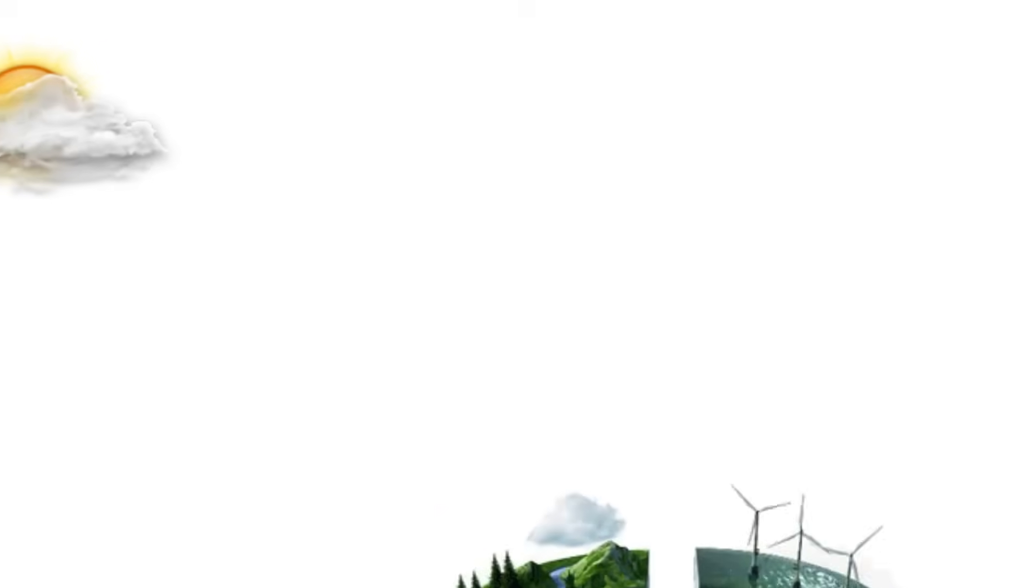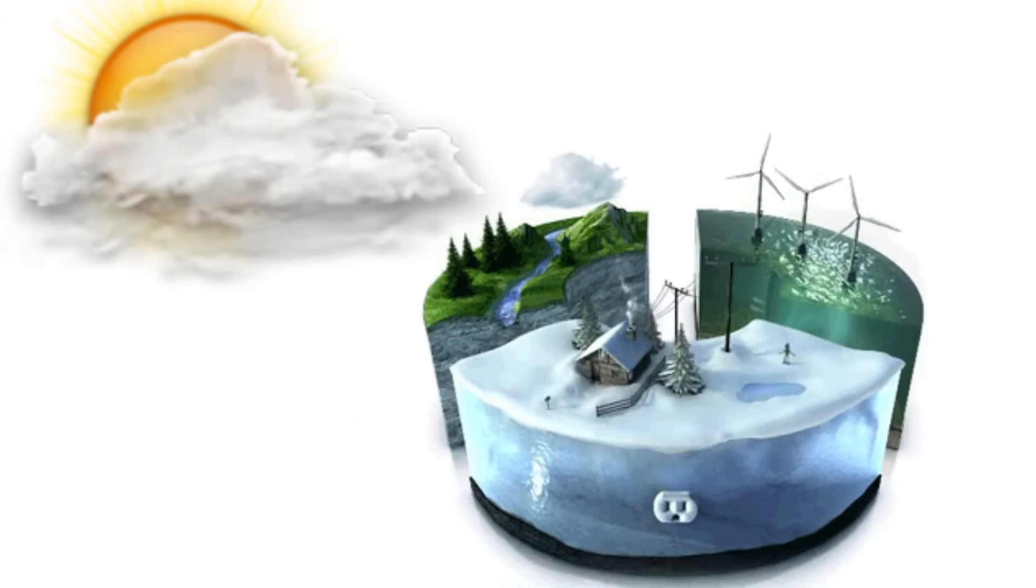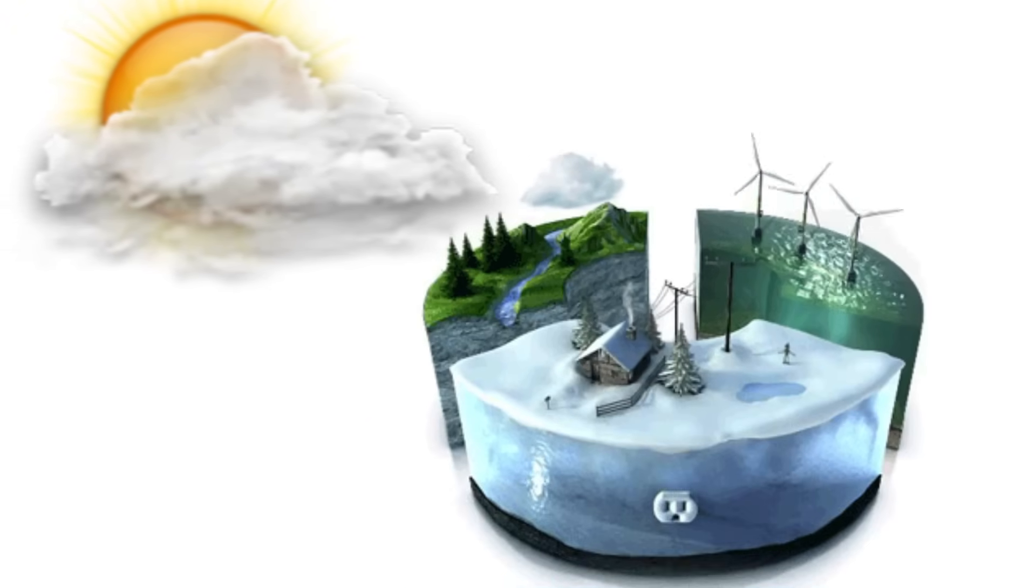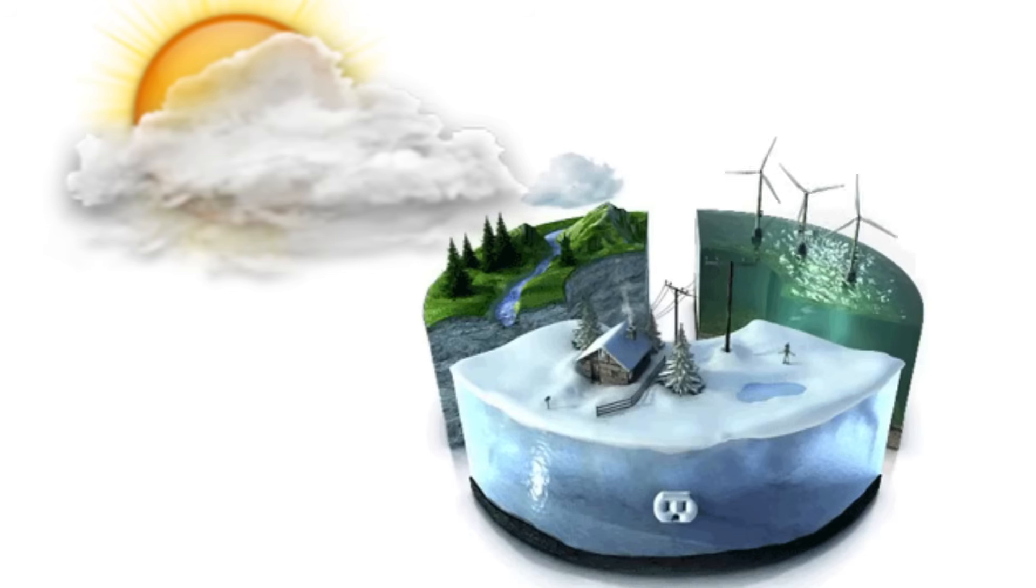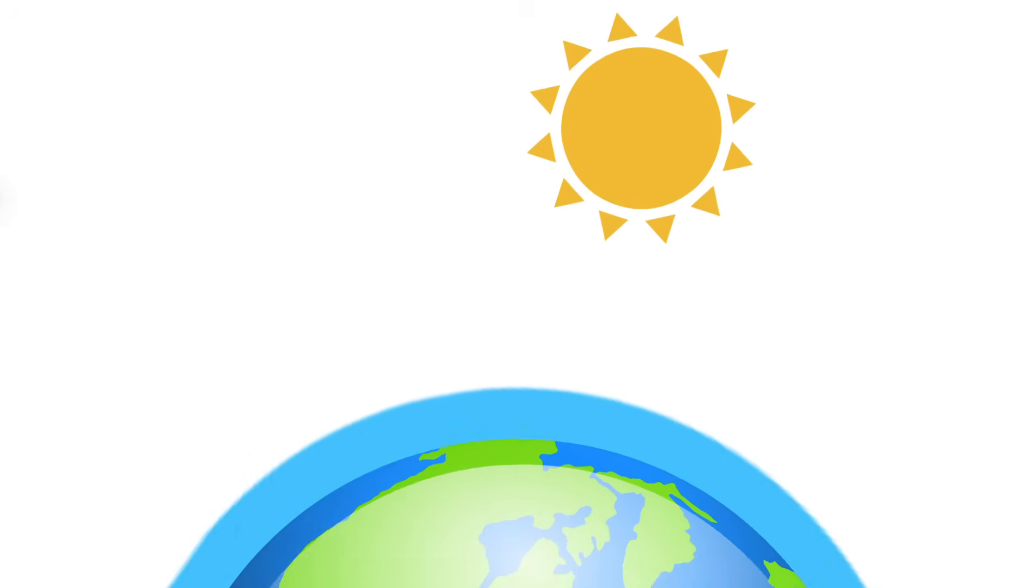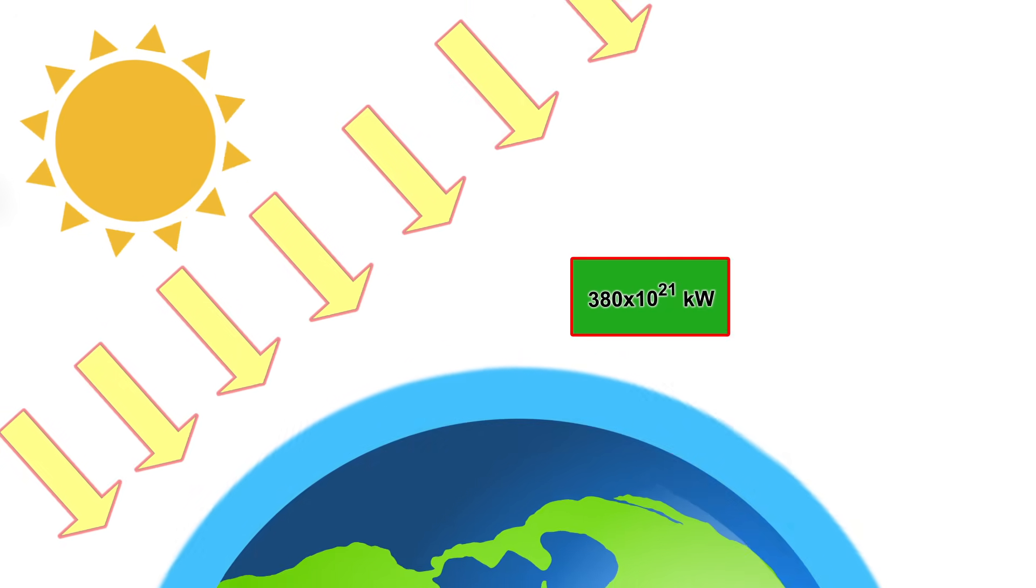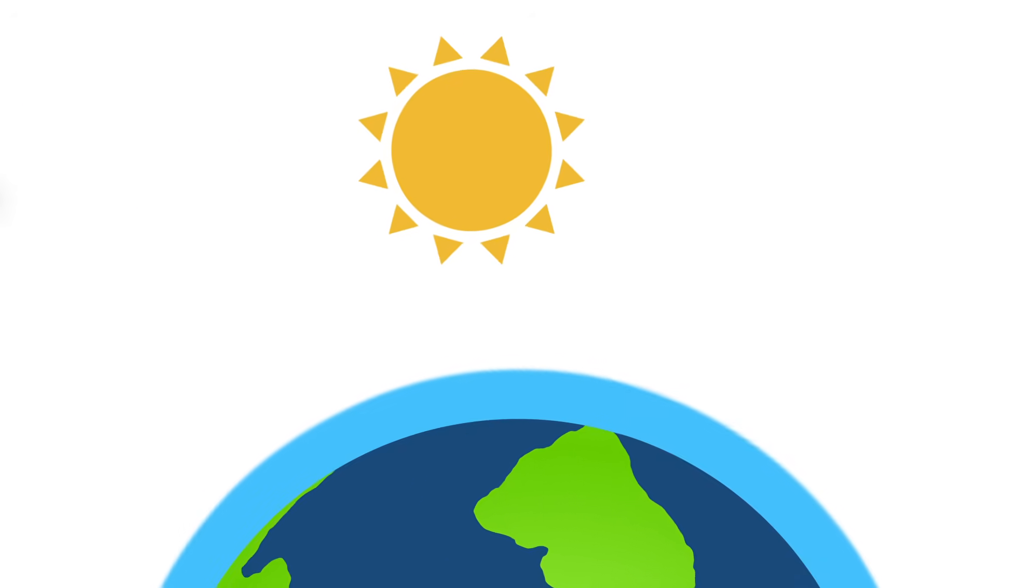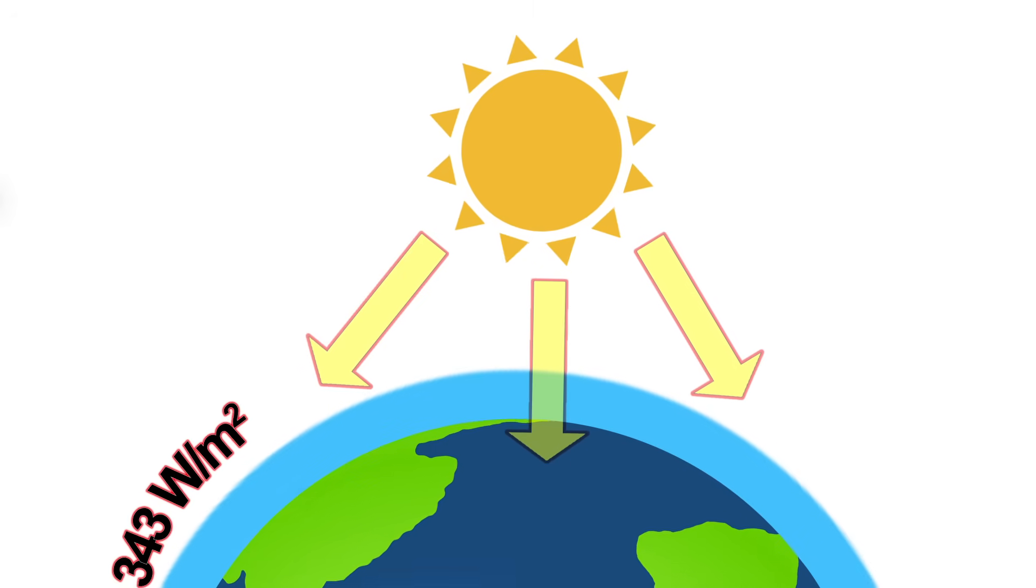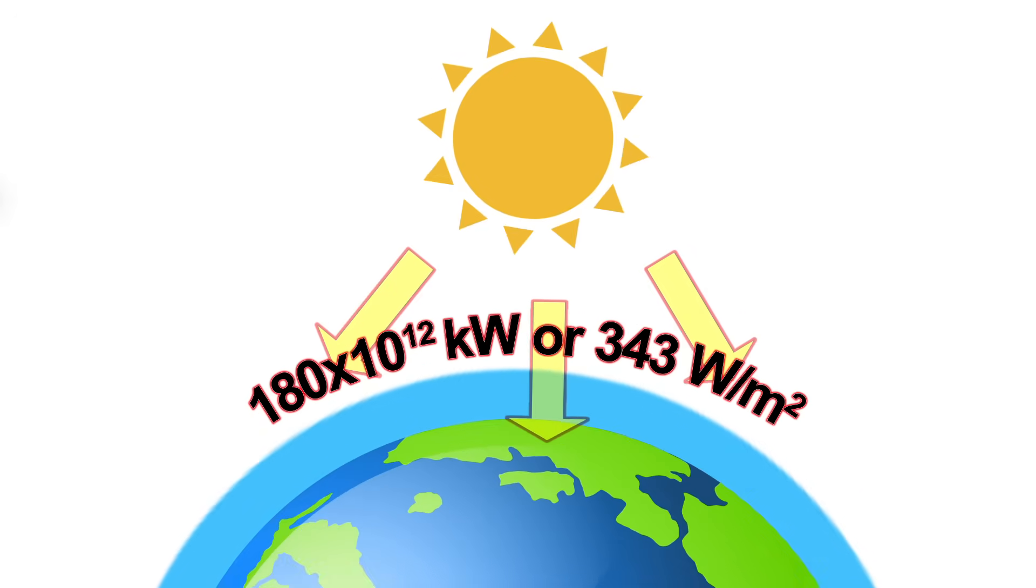Solar energy is the most abundant permanent energy resource on Earth, available in its direct solar radiation form and indirect forms like wind, biomass, and hydro. The Sun emits energy at a rate of 386 trillion kilowatts every second. Only a tiny fraction, approximately 180 trillion kilowatts, is intercepted by the Earth, or 343 watts per meter of Earth's surface.